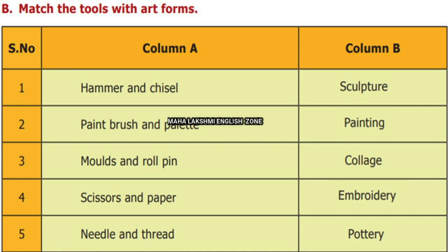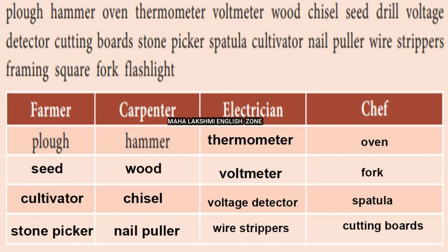Now we are given art tools and must identify what type of art form they are used for. Hammer and chisel are used for sculpture — making statues. Paintbrush and palette are used for painting. Molds and rolling pin are used for pottery. Scissors and paper are used for collage. Needle and thread are used for making embroideries.